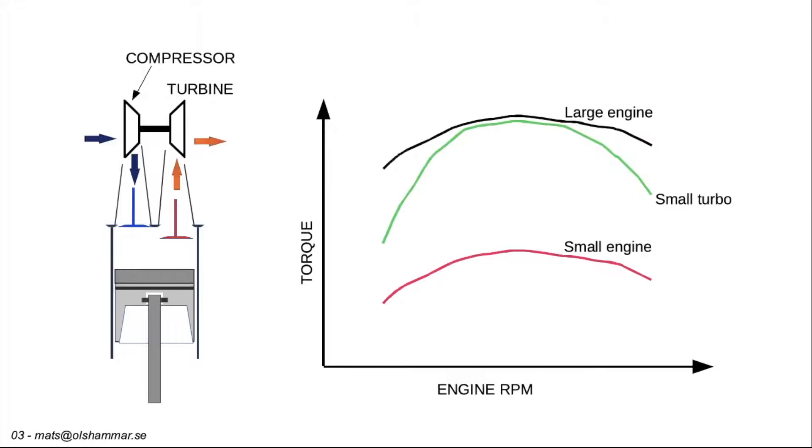A small turbo will spool up fast but it lacks capacity at higher rpms. A large turbo has good capacity at higher rpms but will not help at low rpms.